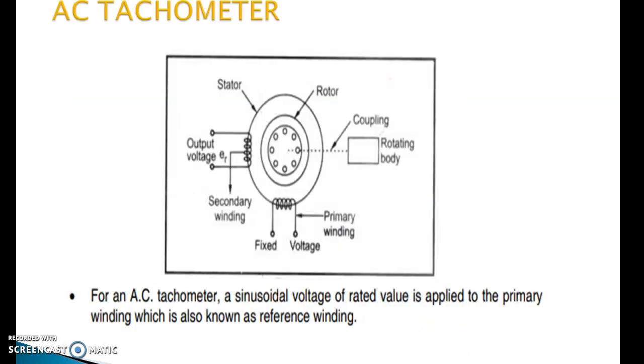Next one is AC tachometers. The diagram shows an AC tachometer. For an AC tachometer, a sinusoidal voltage of rated value is applied to the primary winding which is also known as reference winding. This is stator, this is rotor, this is coupling with rotating body. This is output voltage, this is secondary winding, this is fixed voltage that is primary winding.